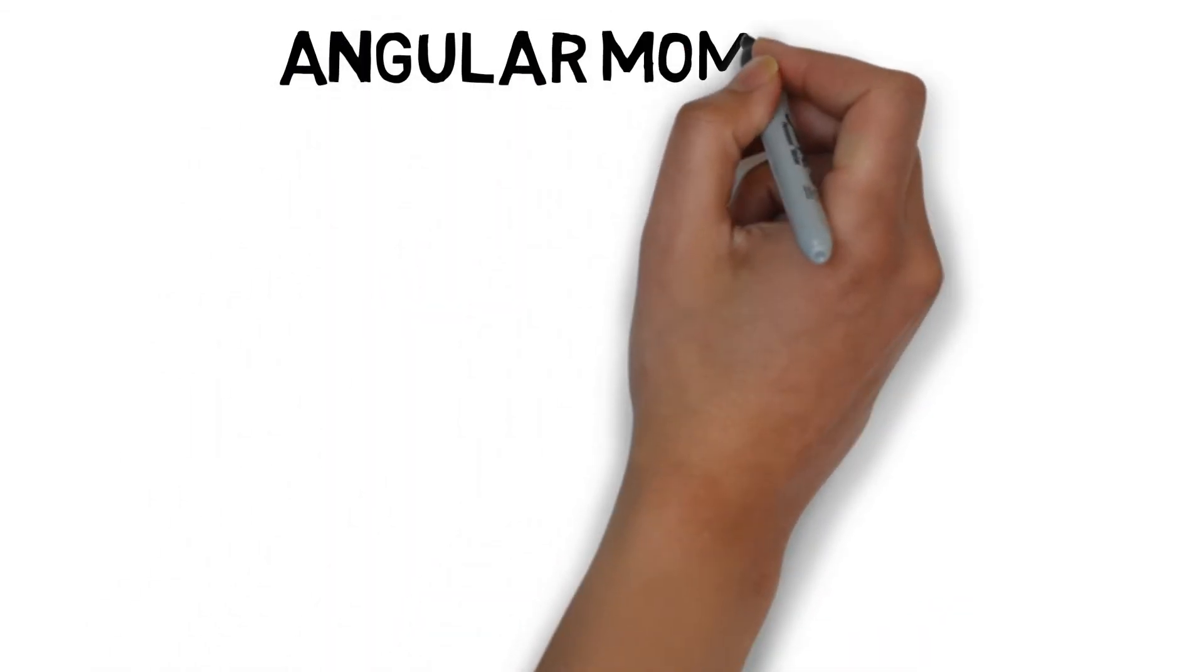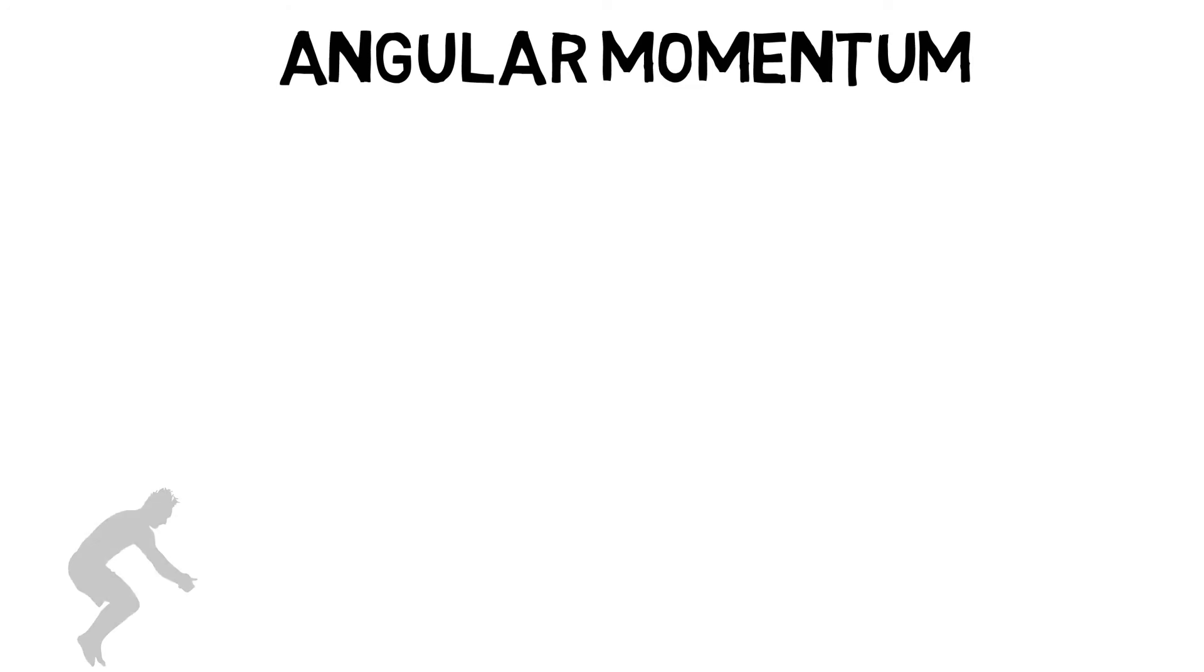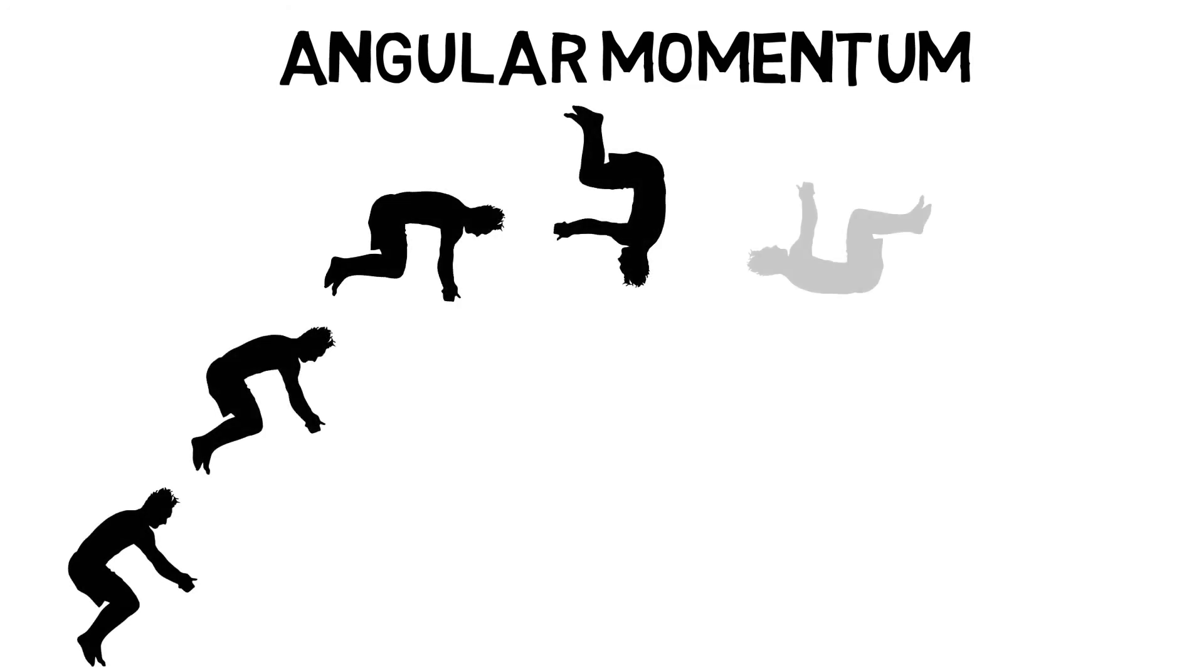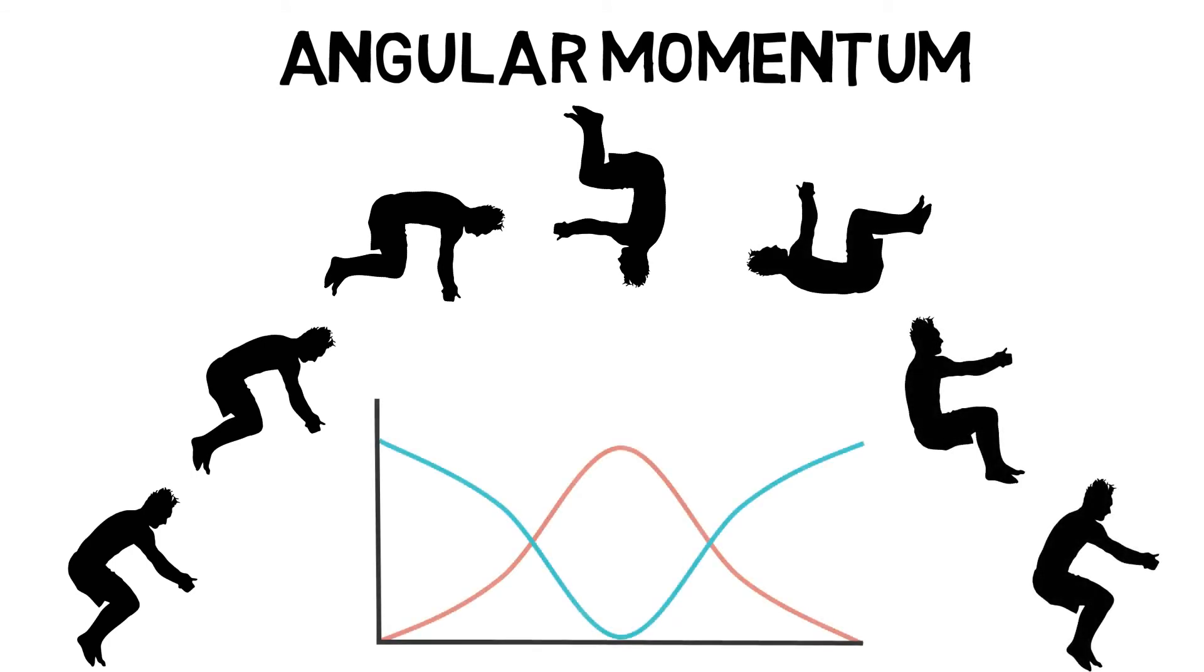Angular momentum is the relationship between the amount of inertia and angular velocity, or what happens when our bodies spin and turn. It is inversely proportional, so when one goes up, the other one goes down. If the rate of spin increases, the amount of resistance decreases.